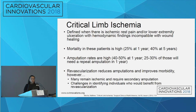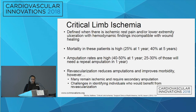CLI is defined by significant ischemic rest pain and/or lower extremity ulceration when hemodynamic findings are incompatible with wound healing — usually an ABI of less than 0.4 or pressures below 30. We know mortality, amputation rates, and re-amputation rates are high in these patients. Living in South Texas, this is very true in our community. Revascularization does reduce amputations and morbidity; however, many remain ischemic and require secondary amputation, and there are lots of challenges in identifying those who would benefit.